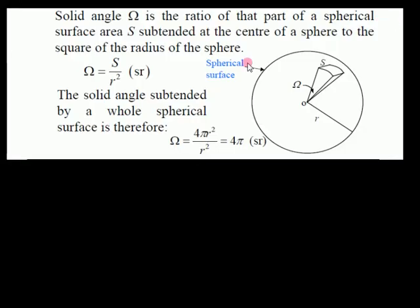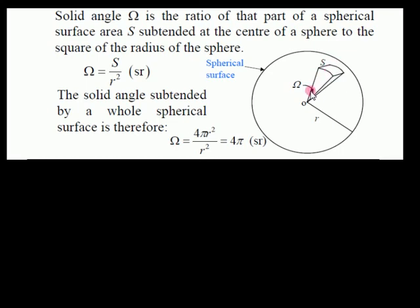Now the idea of solid angle: the solid angle omega is the ratio of the part of a spherical surface area subtended at the center of a sphere to the square of the radius of the sphere. S equals the total area and r squared is the radial distance.